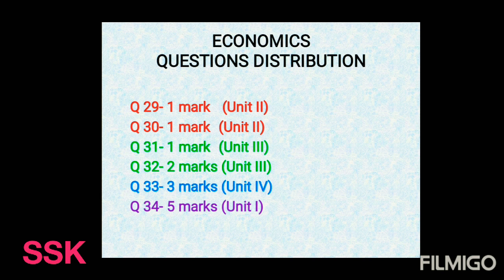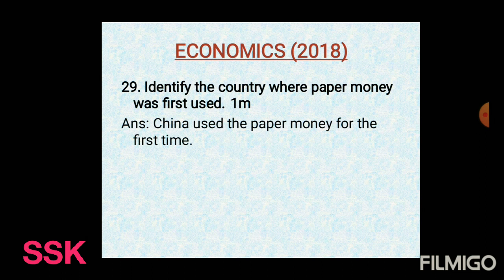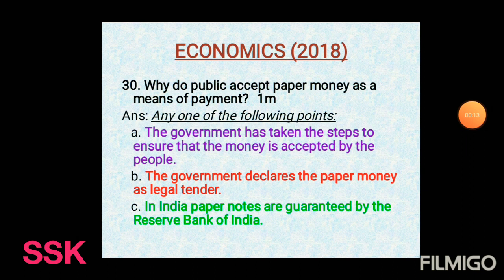Mark distribution and question distribution are now clear. Now let's move on to the explanation of the questions. First question, question number 29: Identify the country where paper money was first used. The answer is China — paper money was first invented and used in China.